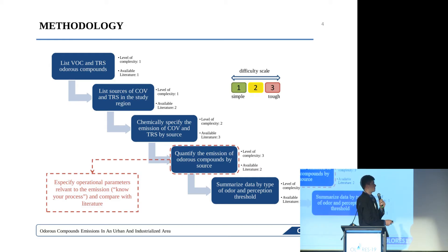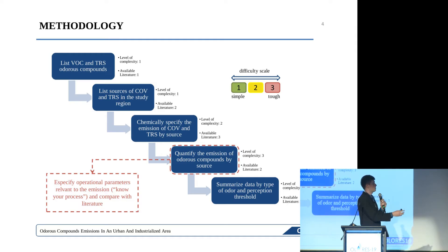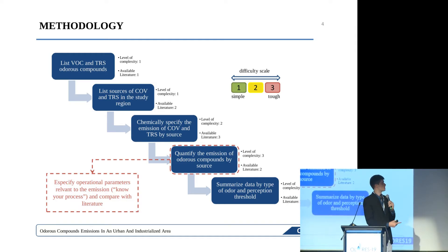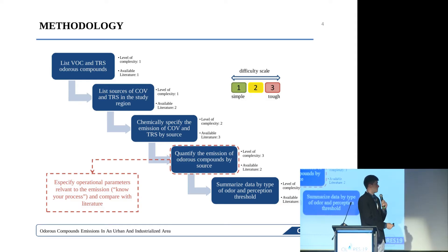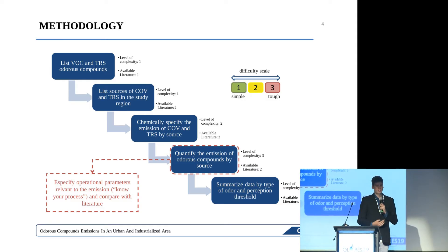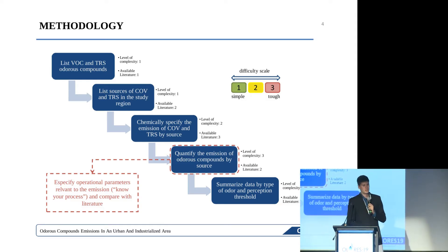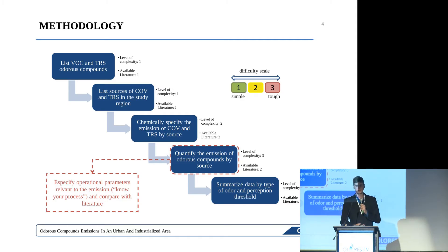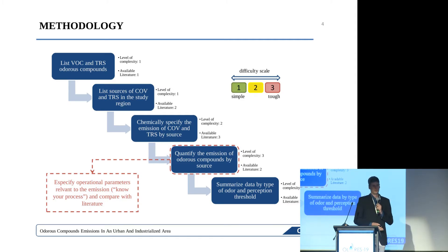What do we know so far? We know that TRS and ammonia compounds are clearly odorant. There is also a different group called VOCs — volatile organic compounds — which present a variety of compounds; some of them are odorant, others are not. They are emitted by several different industries, especially in an urban industrialized area.